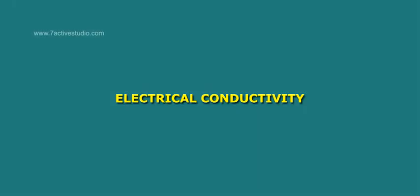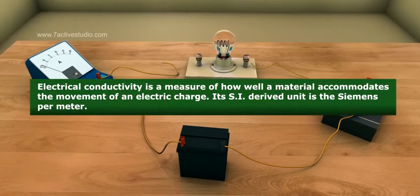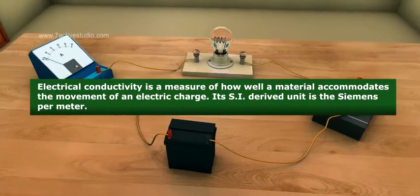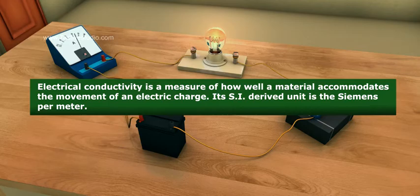Electrical conductivity is a measure of how well a material accommodates the movement of an electric charge. Its SI-derived unit is the Siemens per meter.